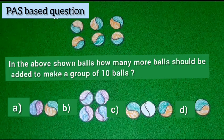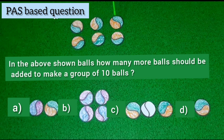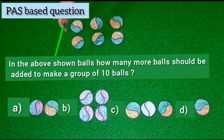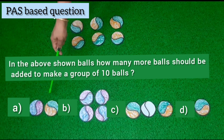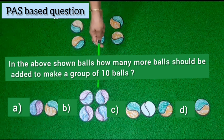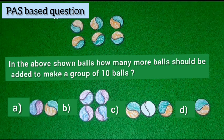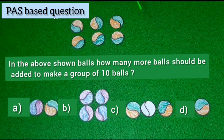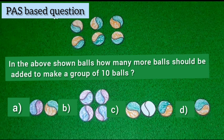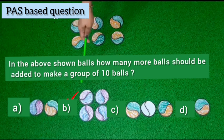Now students, here is our question for practice. In the above shown balls, how many more balls should be added to make a group of ten balls? Here we have four options: A is 2 balls, B is 4 balls, C is 3 balls, and D is 1 ball. In this picture we have 6 balls. When 4 more balls are added it will make a group of ten. So option B — 4 balls — is the right answer, and we will put a tick mark at B.